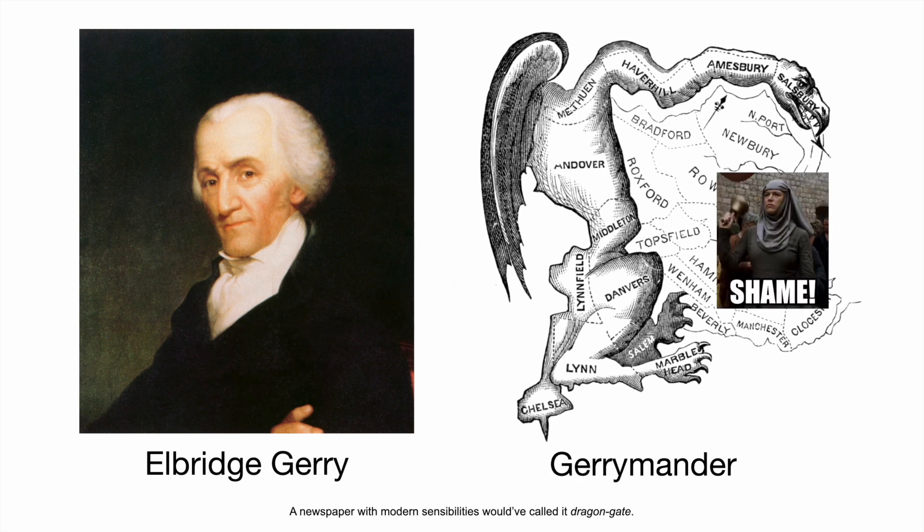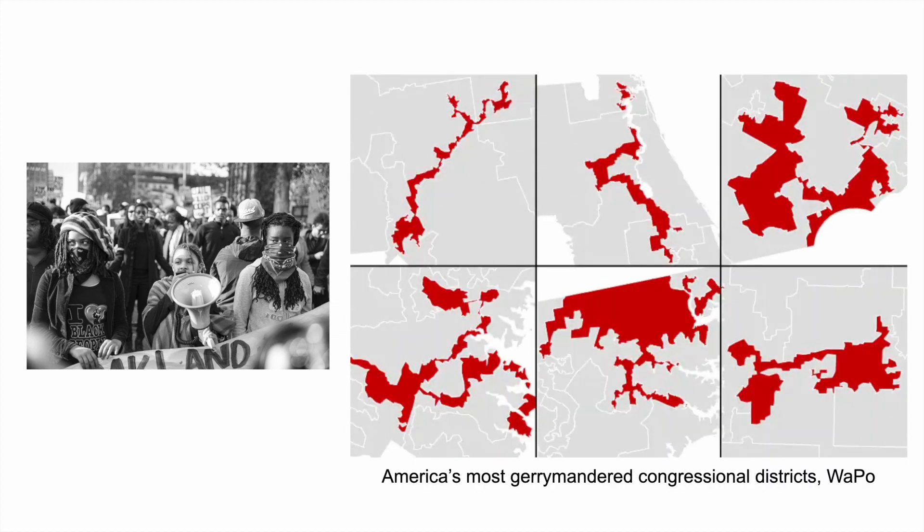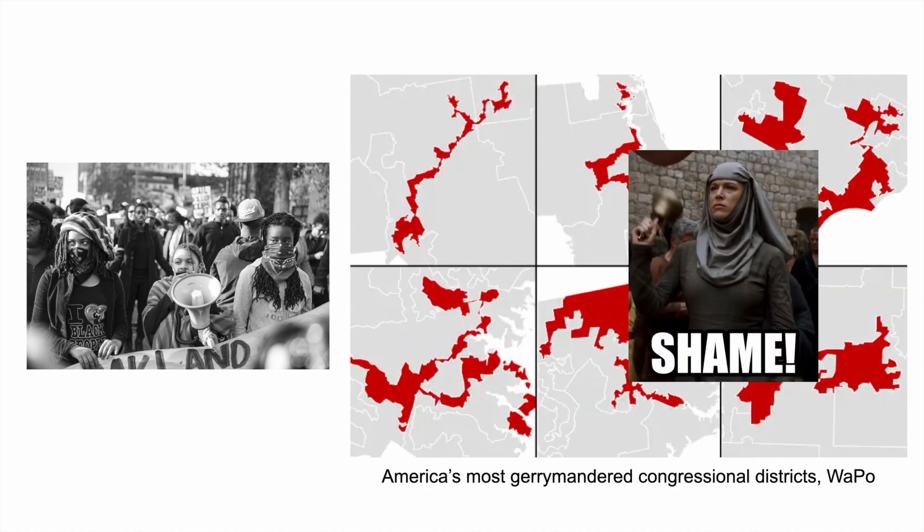Today, the problem is rampant. The most common victims are people of color and the state's political minority. Meanwhile, the media upholds its tradition of shaming the ugliest of district shapes. All right, time for an exercise. Suppose we have a state made up of 36 square precincts. How should we split this state into four districts of equal size?